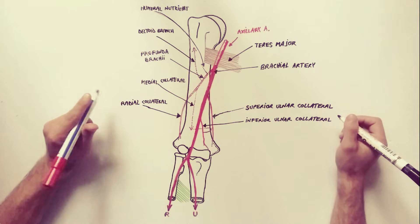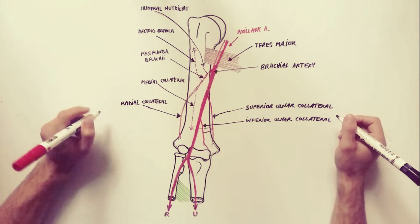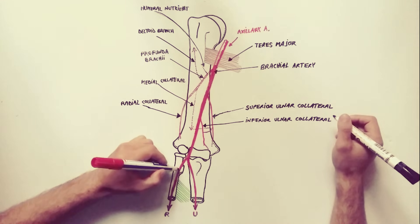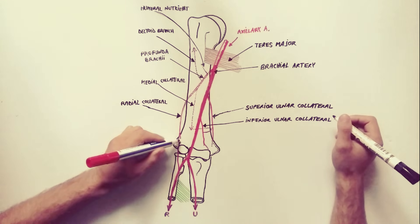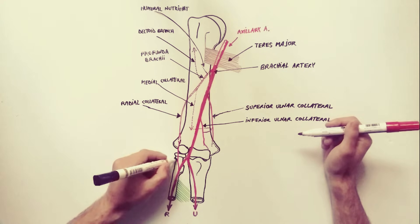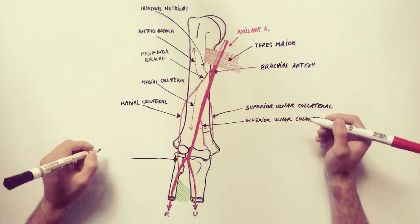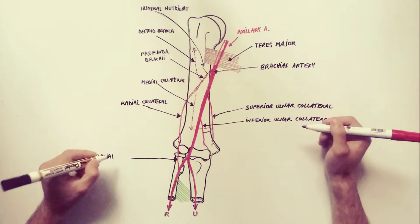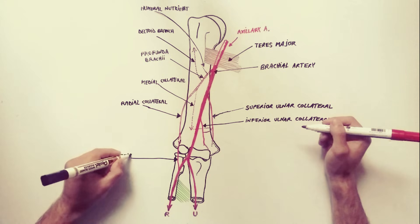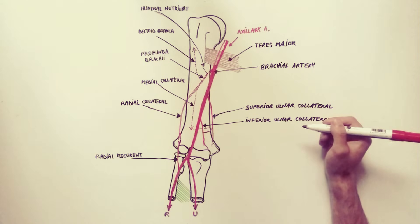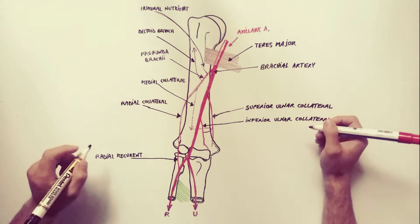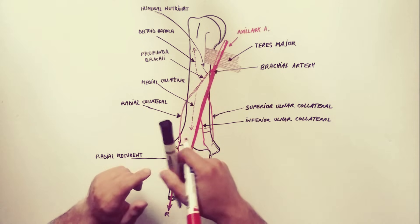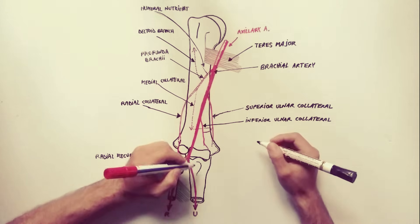To complete the diagram of the anastomosis around the elbow joint, we will also draw the branches from the radial and ulnar arteries. From the radial artery, we have the radial recurrent artery, which ascends to anastomose with the radial collateral in front of the lateral epicondyle.